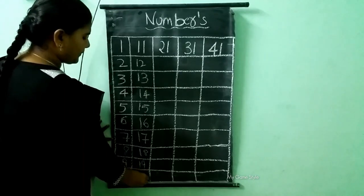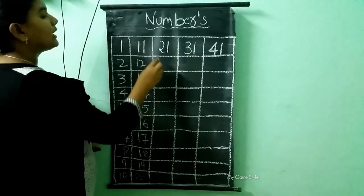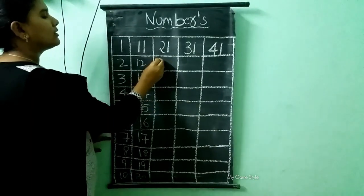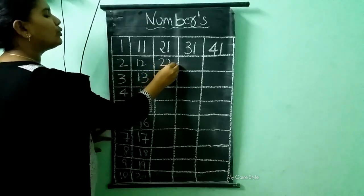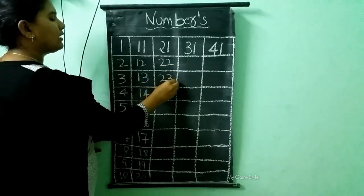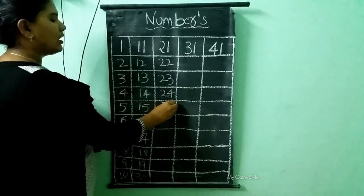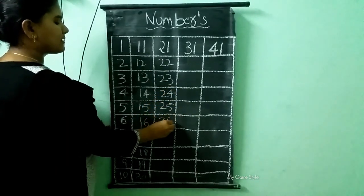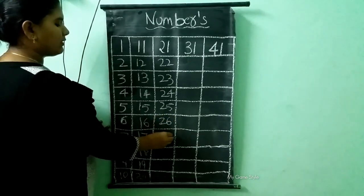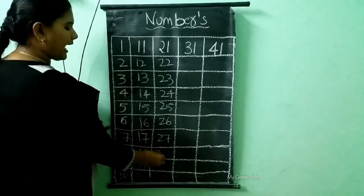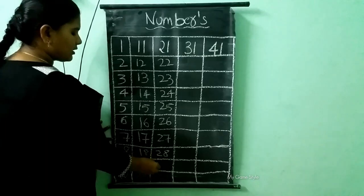Here it is given 21, 22, 23, 24, 25, 26, 27, 28, 29.